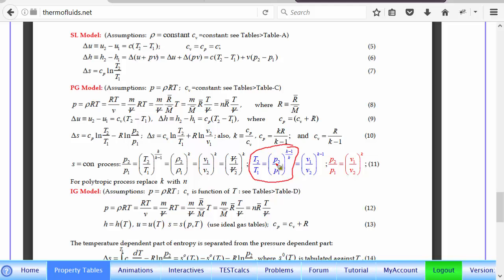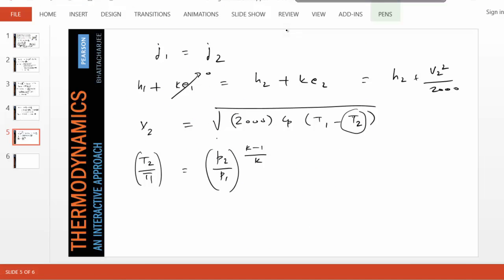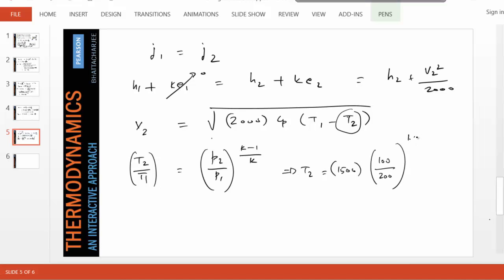So if we use this, then T2 becomes T1, which is 1500, times P2 is 100 over 200, and k had been picked up 1.29 minus 1 over 1.29, and that turns out to be 1283 kelvin. So therefore, V2, after you substitute this, becomes 605.9 meters per second.